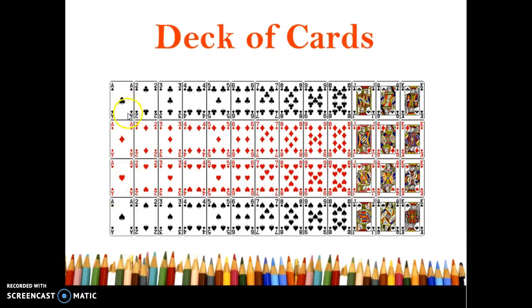Each suit has 13 cards. We have an ace and then 2 through 10 and then jack, queen, and king. These are what we call face cards.